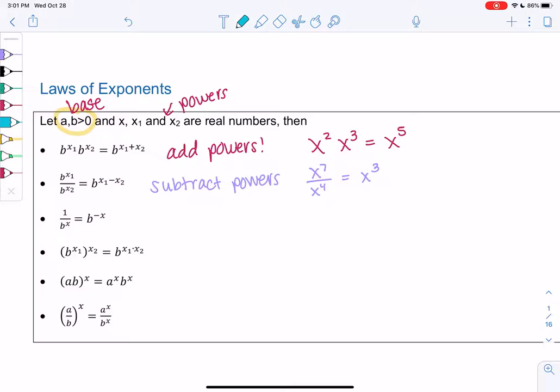I went over negative powers. If I have 1 over b to the x, I can bring it up as b to the negative x. Or if I have b to the negative x, I can do the reverse and flip it. So the negative power is just a reciprocal. We did that example above.